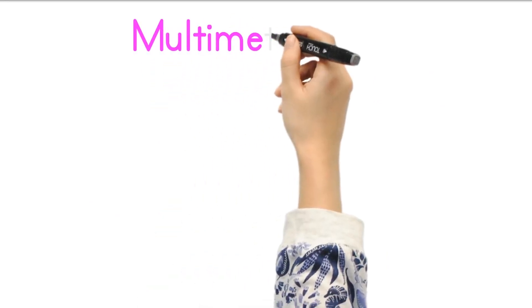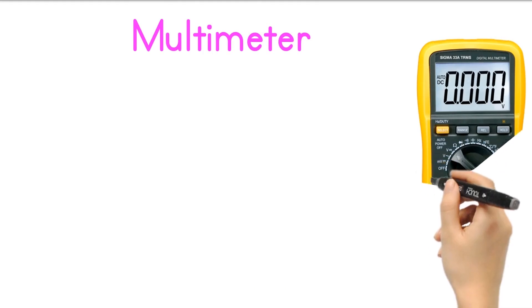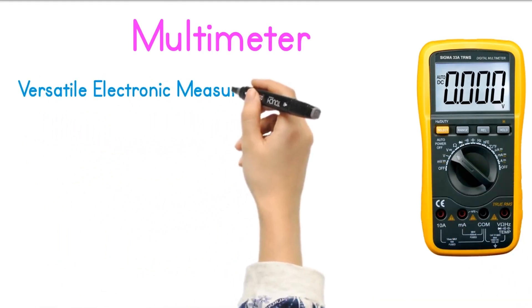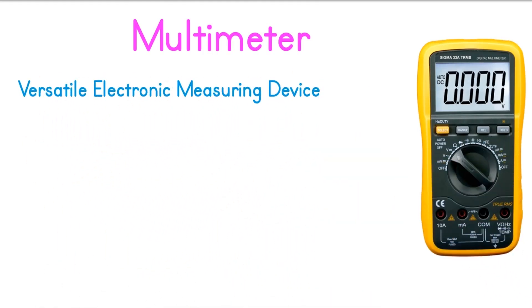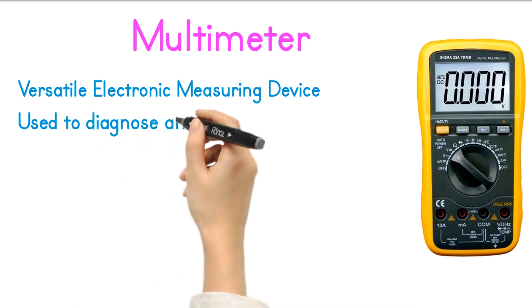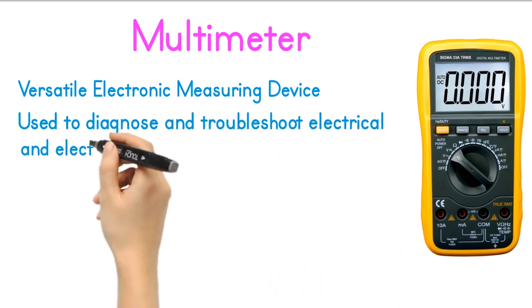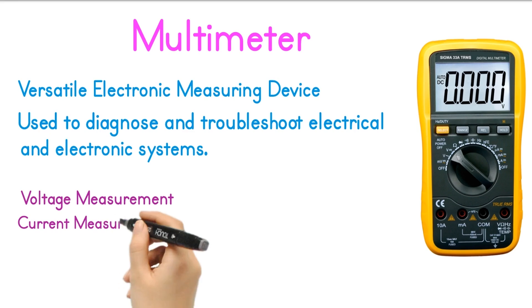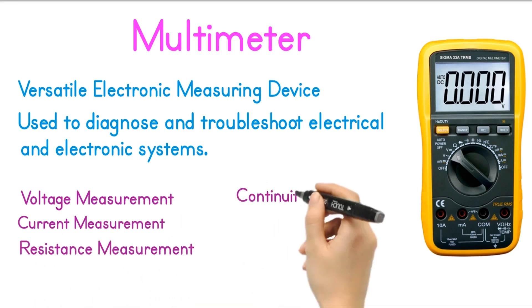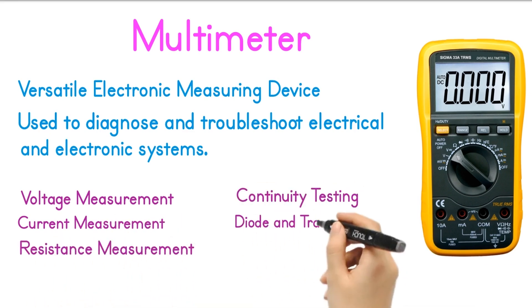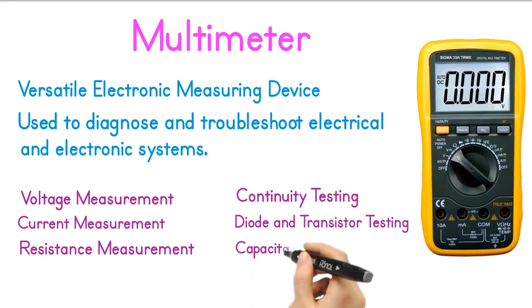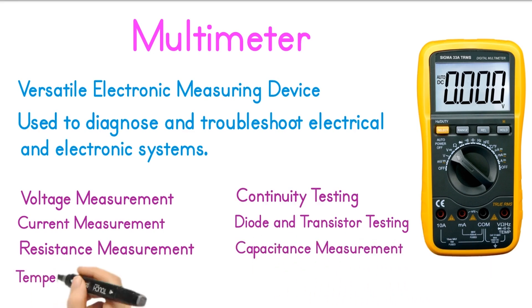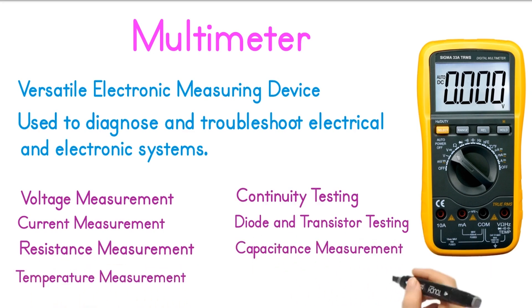The first and most useful device for an instrument technician is the multimeter. A multimeter is a versatile electronic measuring device used by technicians, electricians, and engineers to diagnose and troubleshoot electrical and electronic systems. Some common functions and features of multimeters are: voltage measurement, current measurement, resistance measurement, continuity testing, diode and transistor testing, and capacitance measurement. Some advanced models can also measure temperature using thermocouples.